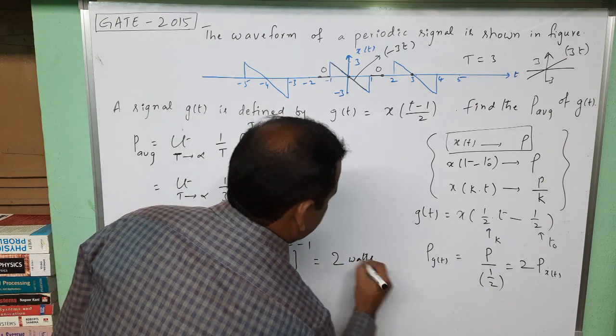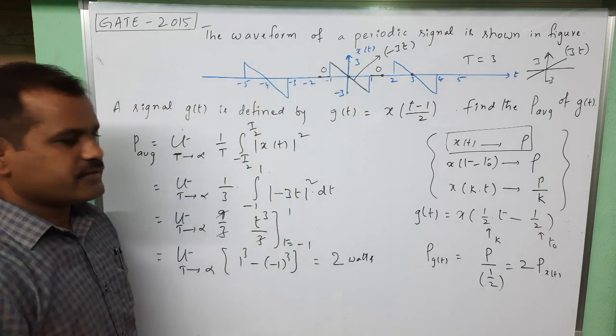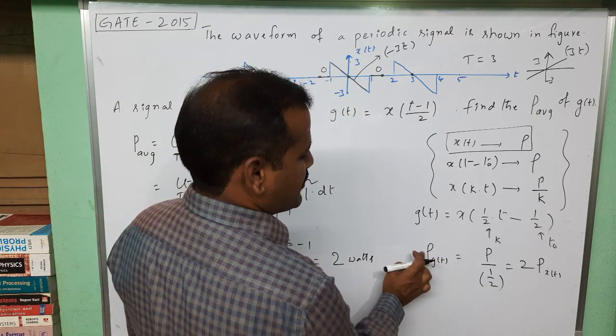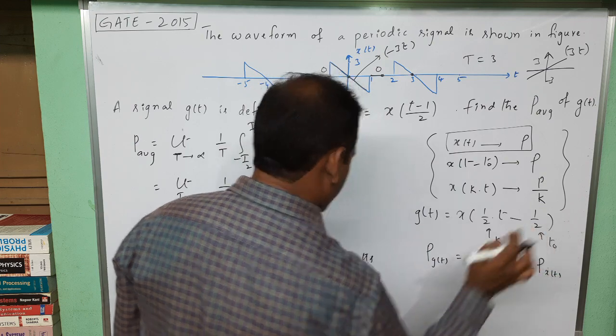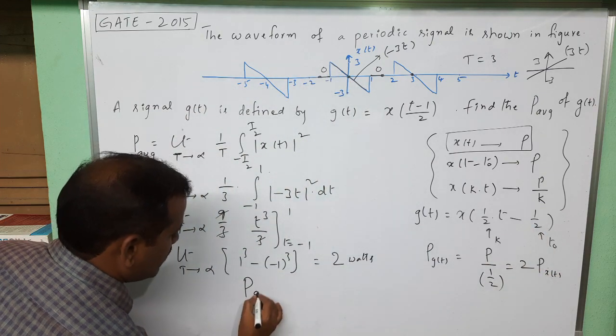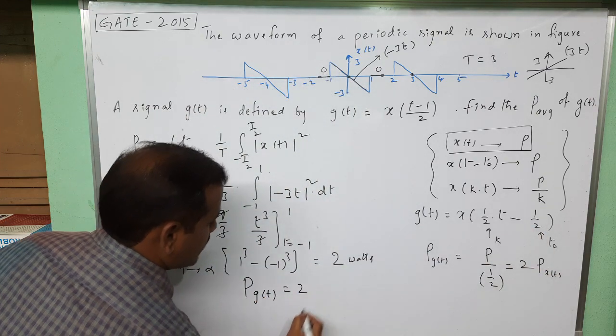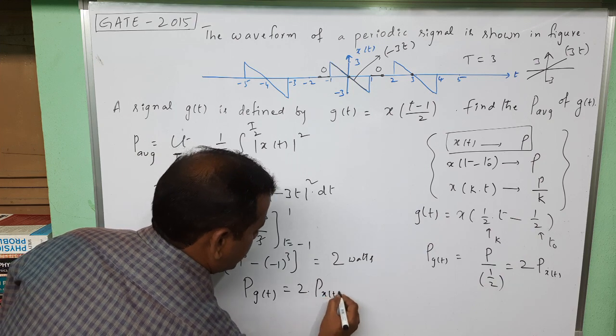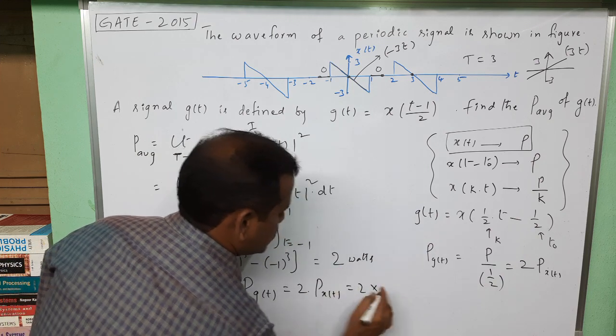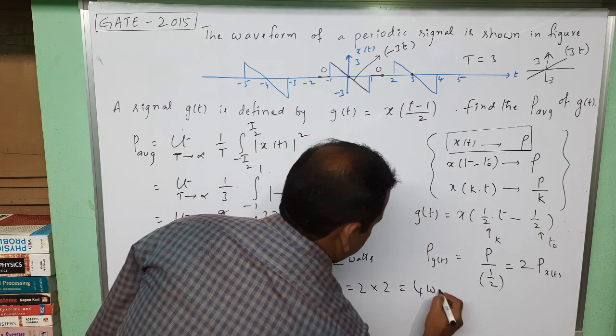We need to calculate the power of g(t), which is 2 times the power of x(t). So the power of g(t) is 2 times the power of x(t), that is 2 times 2, which equals 4 watts power.